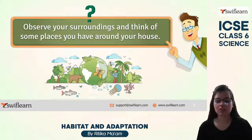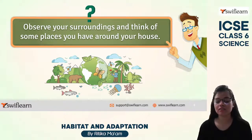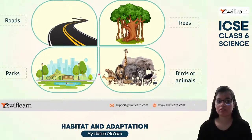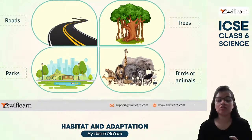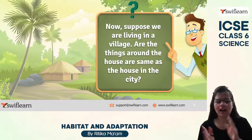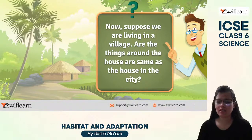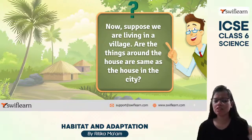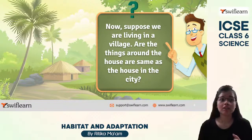If I tell you to observe your surroundings and tell me about some of the places around your house, what would the answers be? We have roads, parks, some birds or animals, and trees — these are things we get from our surroundings. Now if we were living in a village area, would things look the same as in a city? No, there would be some differences.